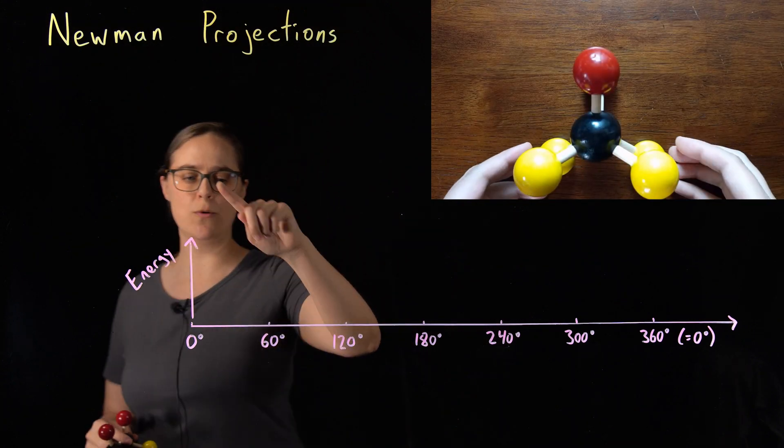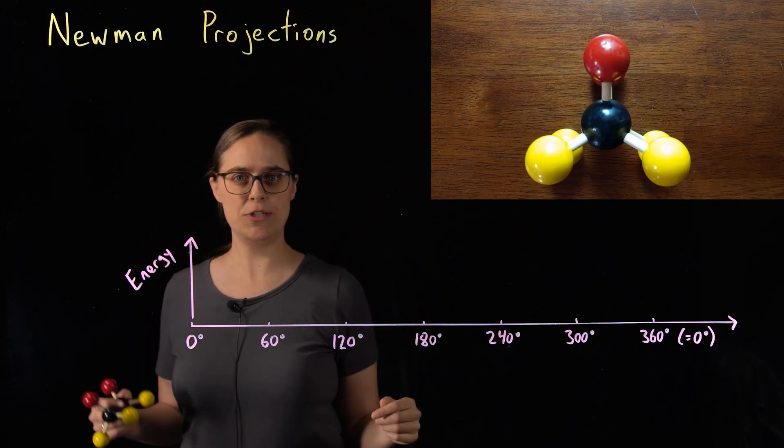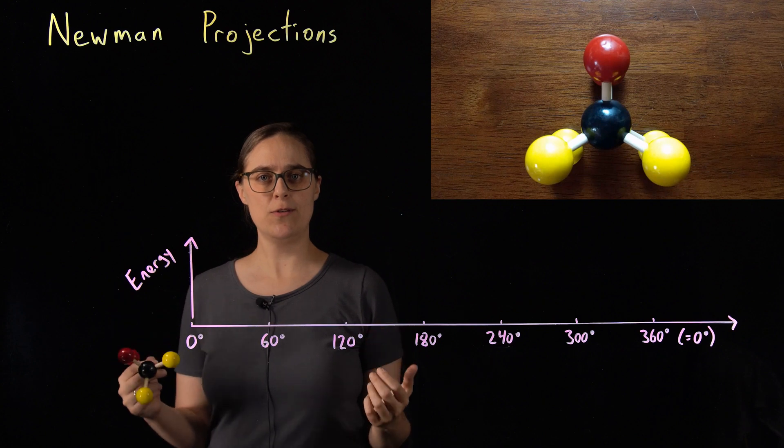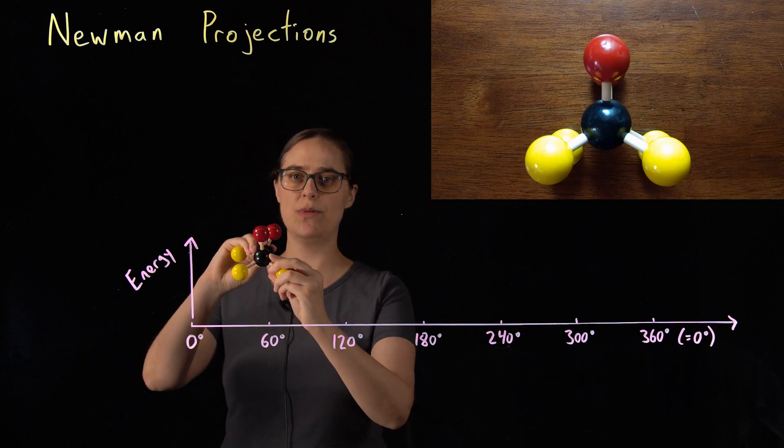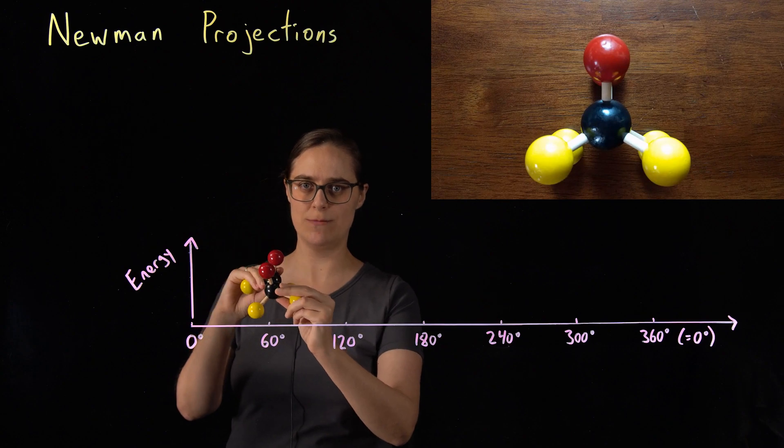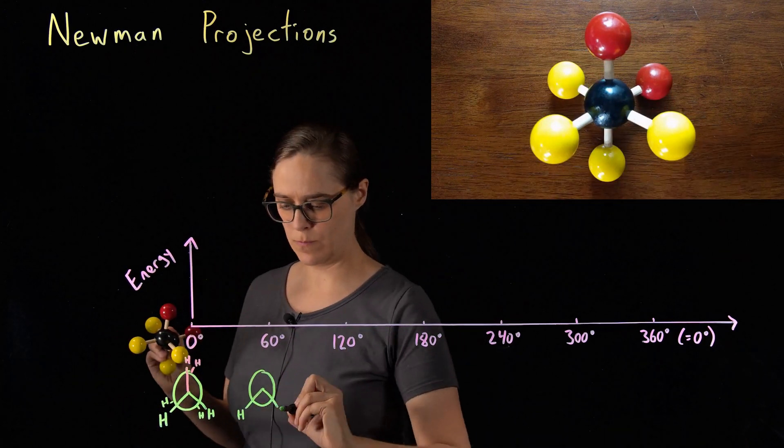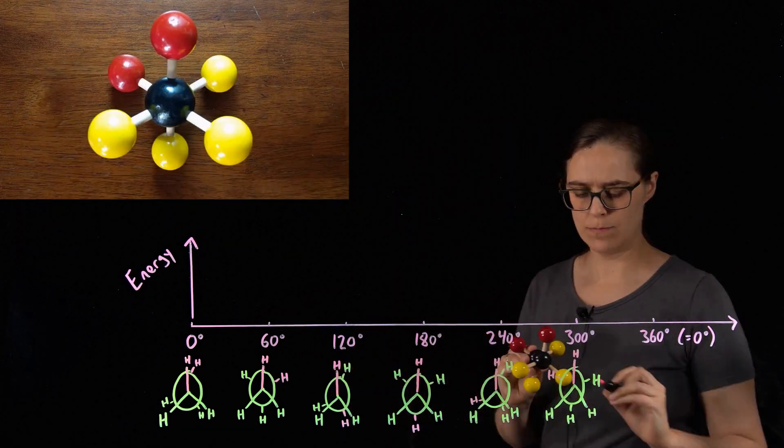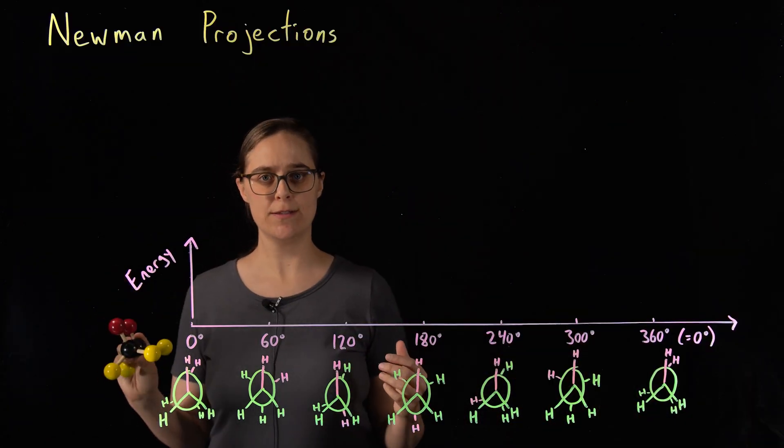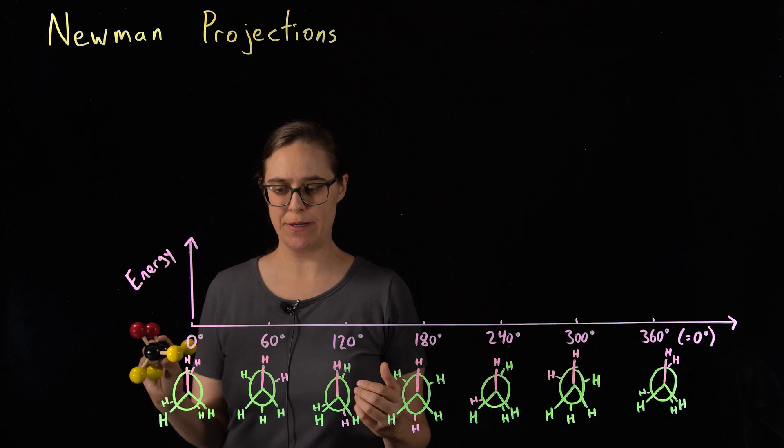Then I want to show you what a potential energy diagram would look like so that you can get an idea of potential energy for any of the conformations between eclipsed and staggered. So let's talk about what this potential energy diagram would look like.